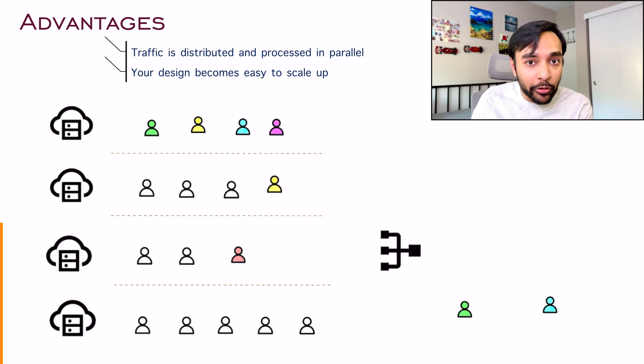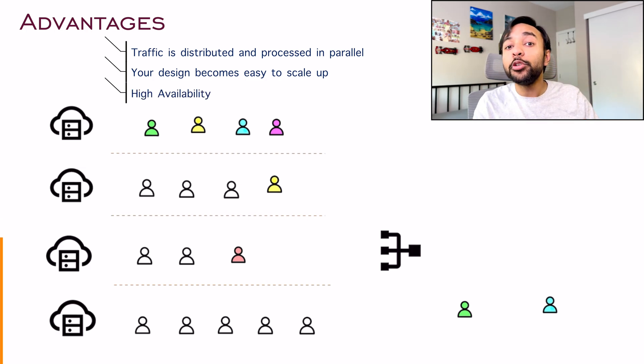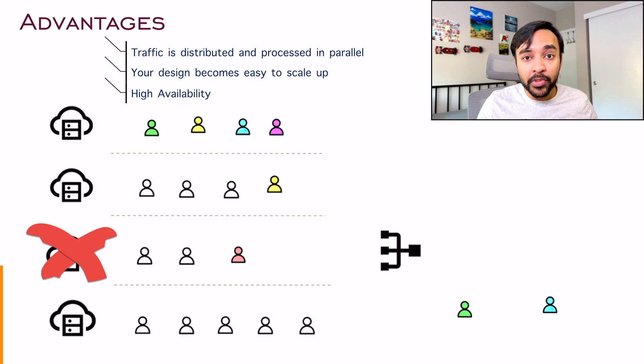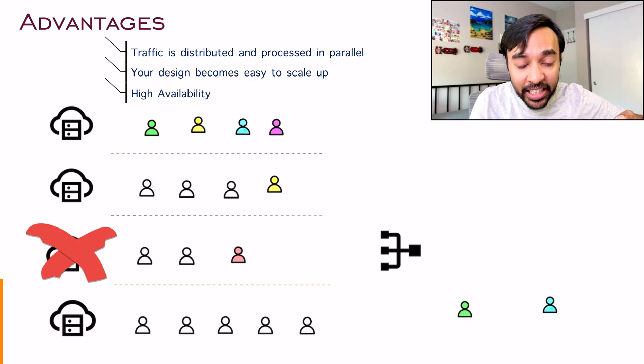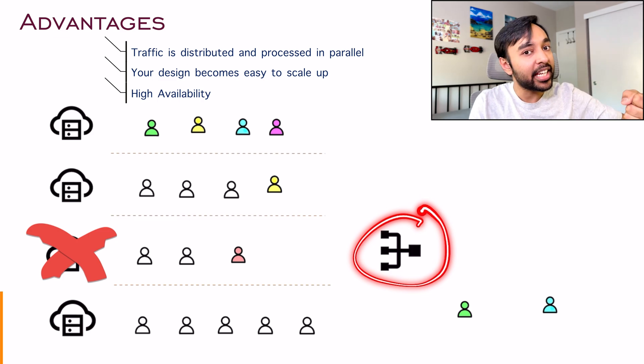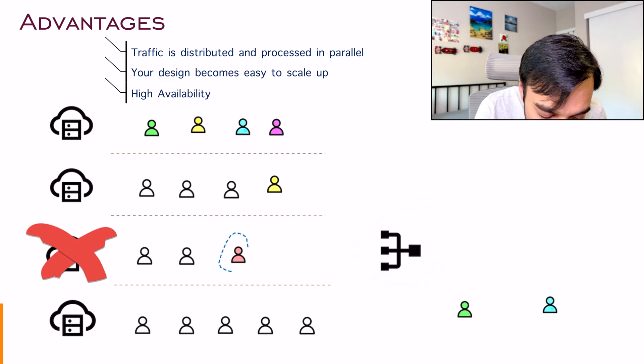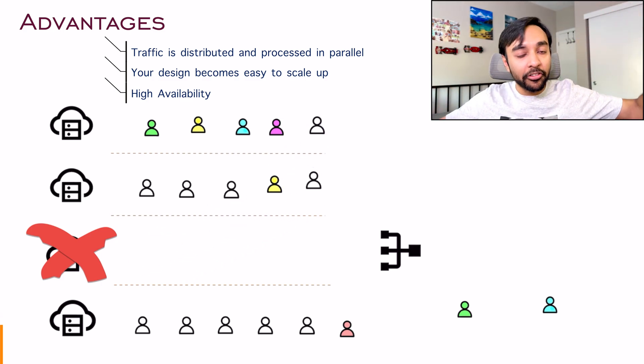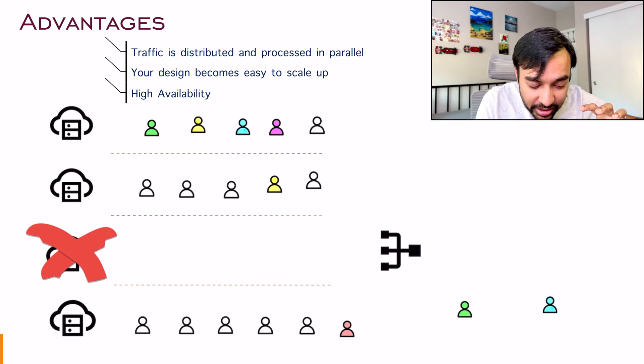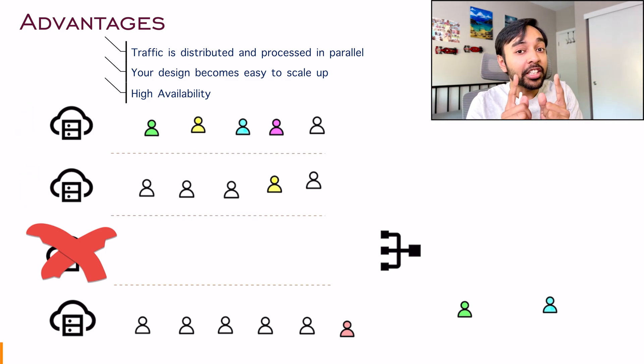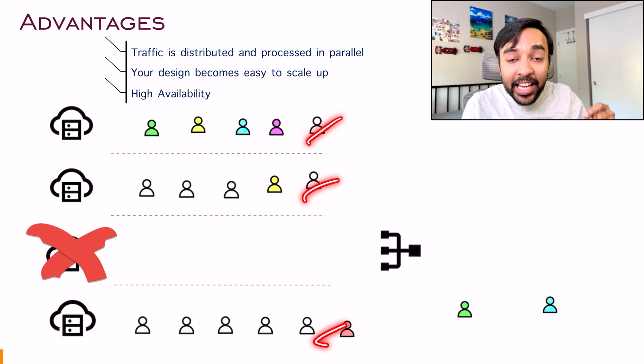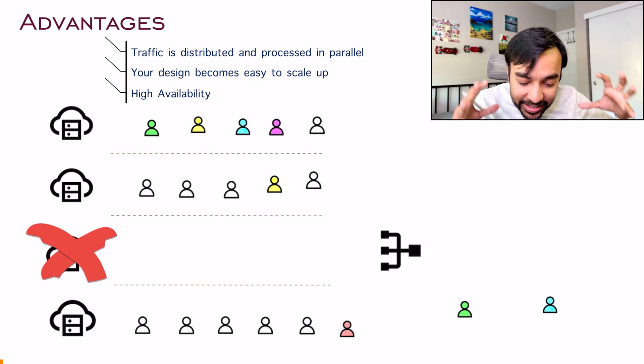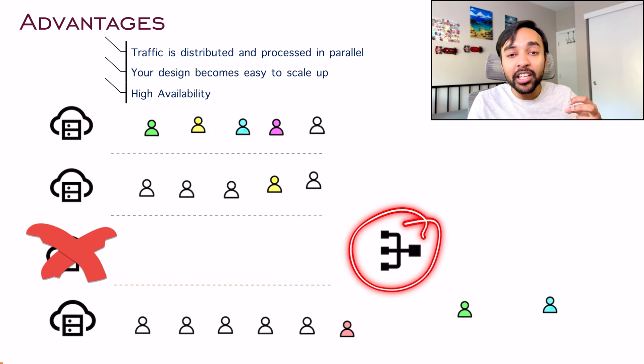And this does not end over here. Having a load balancer allows you to have high availability as well. It simply means that let us say one of your server goes down. You still want the service to be accessible, right? So this load balancer will once again come in play. And what it will do is, it will take all the clients that were connecting to this faulty server and it will allot them to these different servers. So yes, your service time might go down, but your service did not end. Your clients can still connect and they will be served. So once again, it is still better than nothing, right? So these are all the good things that come with having a load balancer in place.